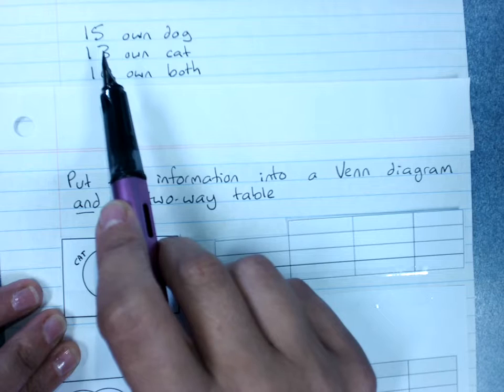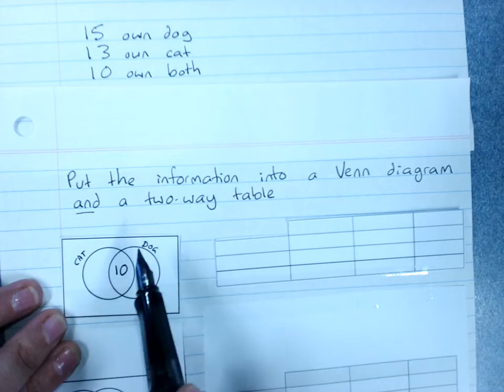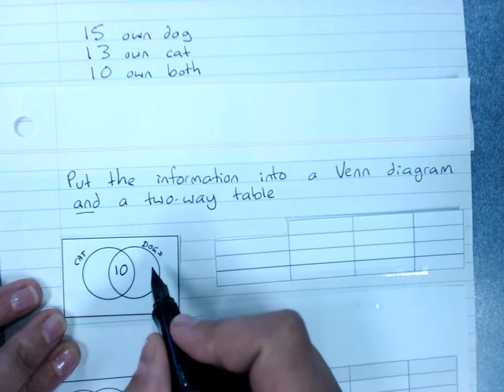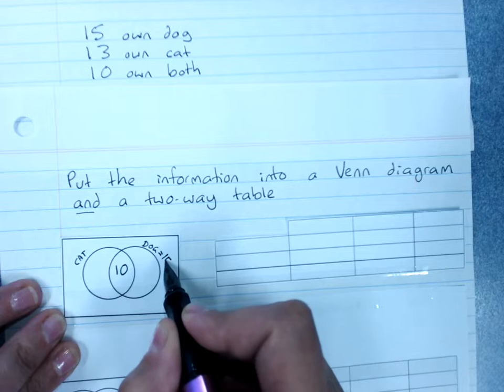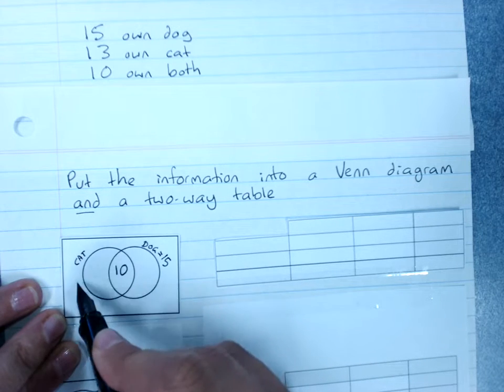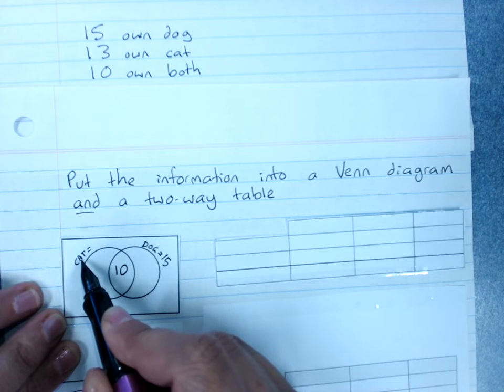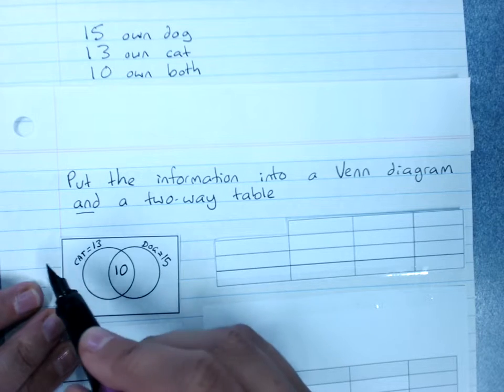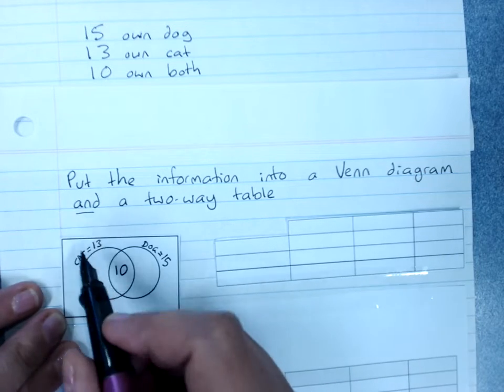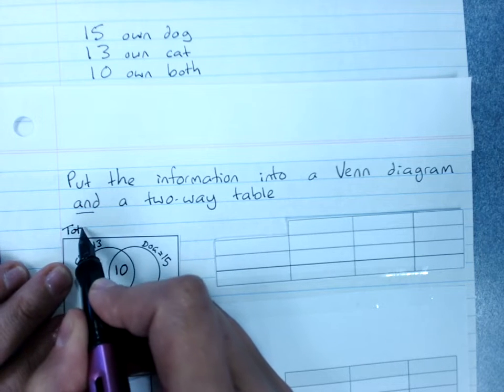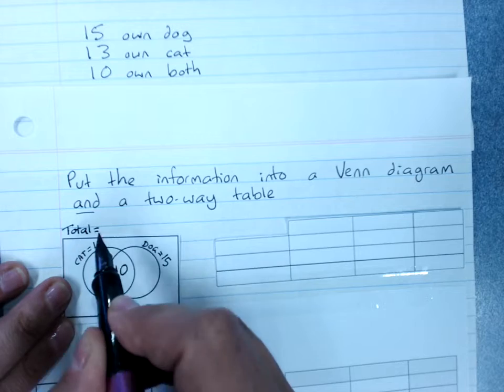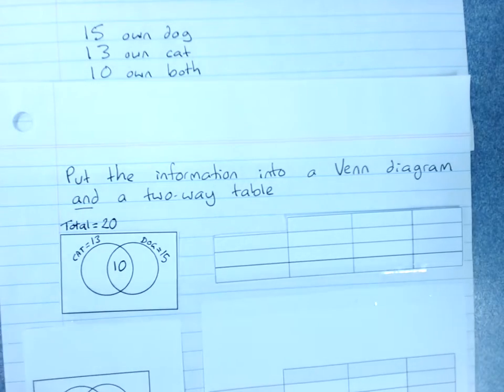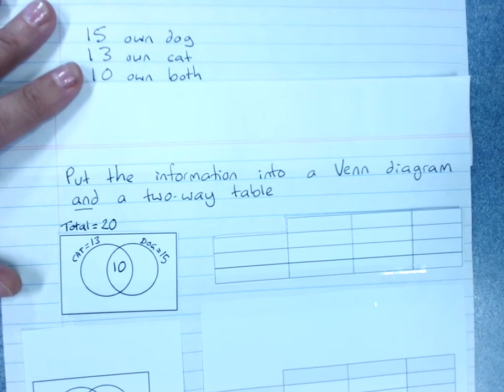Because ten people are in the cat circle and the dog circle. But the fifteen and the thirteen, these go outside the circle because the total number of people who own a dog, the total number of people in the dog circle all up, is fifteen. And the total number of people who own a cat all up, is thirteen. Now we can put a couple of other numbers in before we get started. And one of those is the total. It goes outside at the top left of the rectangle. And the total number of people we asked was twenty.